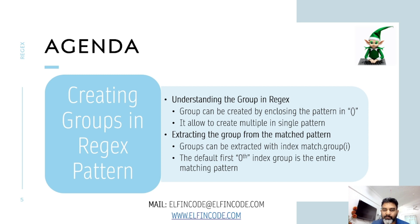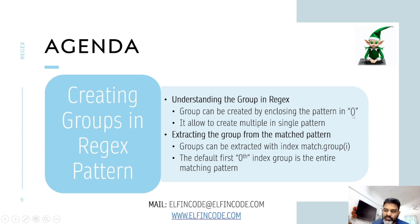Once you are done with the pattern writing, you need to enclose the parts you want to extract inside parentheses. For example, if you are writing an email pattern, you first write the full regex pattern for the email ID, and thereafter if you need only the first name and second name, only those parts need to be enclosed in parentheses. The second step is extracting those groups from the pattern matching.